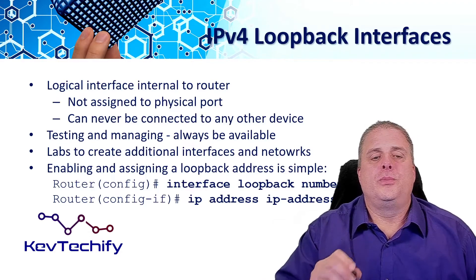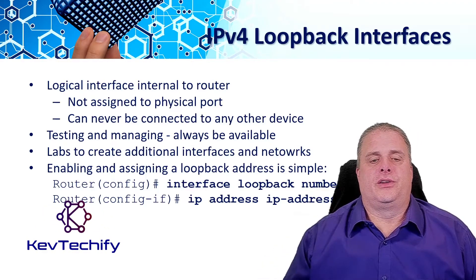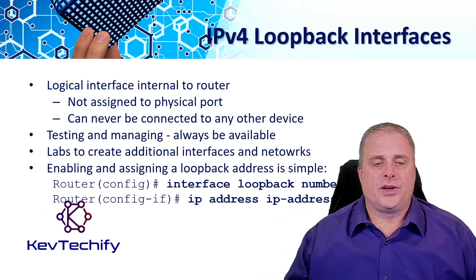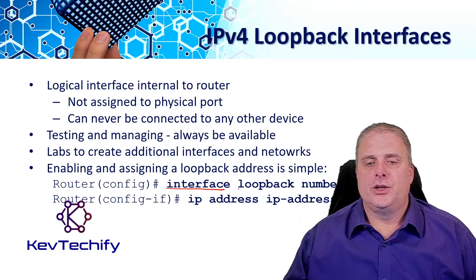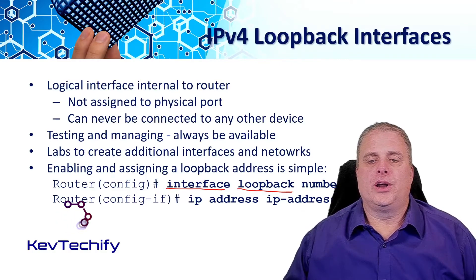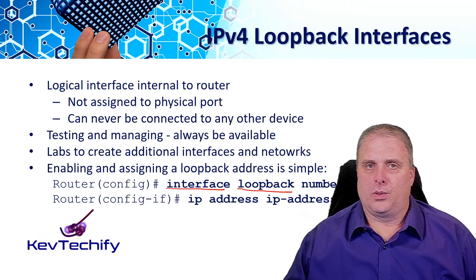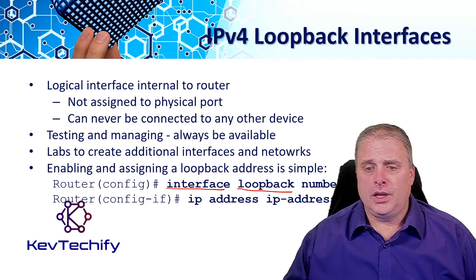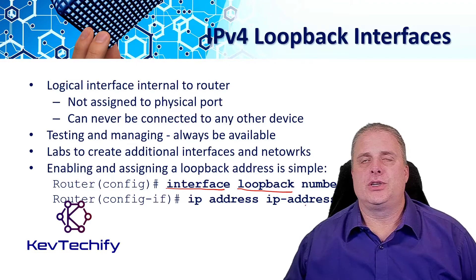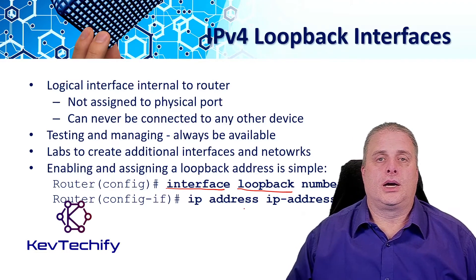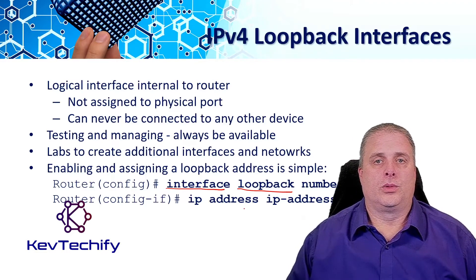Setting up a loopback address is just like setting up an interface. From global configuration mode, you enter the interface command, but instead of saying gigabit or serial, you say loopback and then put a number — numbers start with zero and work their way up. Then you assign an IP address just like you would on a normal interface.